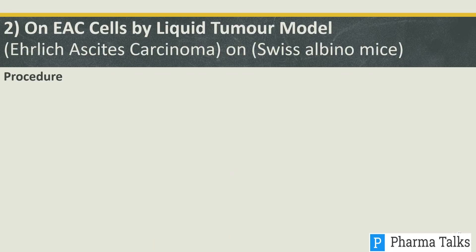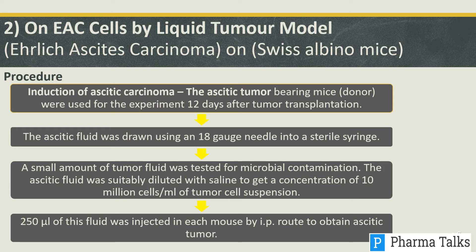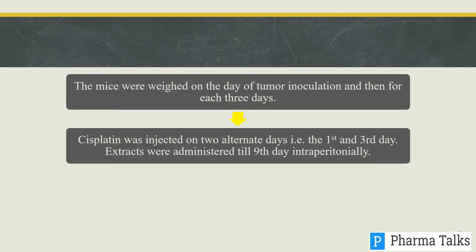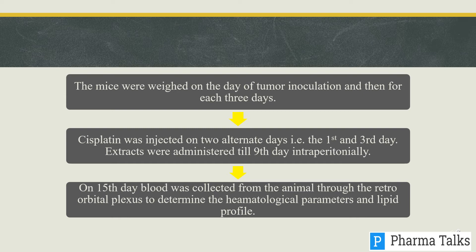The liquid tumor model uses Ehrlich ascites carcinoma (EAC) cells on Swiss albino mice. Ascites tumor-bearing donor mice were used for the experiment 12 days after tumor transplantation. The ascites fluid was drawn using an 18-gauge needle into a sterile syringe and a small amount was tested for microbial contamination. The fluid was diluted with saline to obtain a concentration of 10 million cells per mL of tumor cell suspension, and 250 microliters was injected into each mouse by intraperitoneal route. Mice were weighed on the day of tumor inoculation and every three days thereafter. Cisplatin was injected on two alternate days, and extracts were administered till the 9th day intraperitoneally. On the 15th day, blood was collected through the retro-orbital plexus to determine hematological parameters and lipid profile.